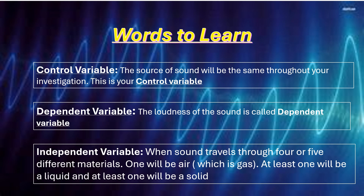Dependent variable: the loudness of the sound is called the dependent variable. Independent variable: when sound travels through four or five different materials, one will be air which is a gas, at least one will be a liquid, and at least one will be a solid.